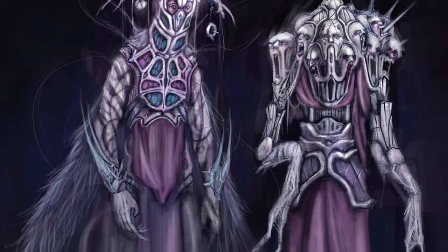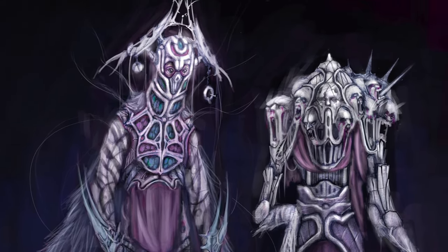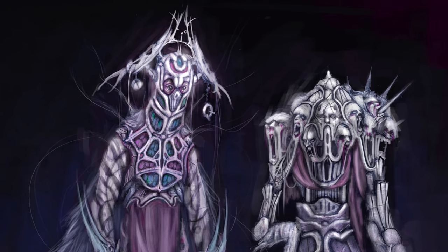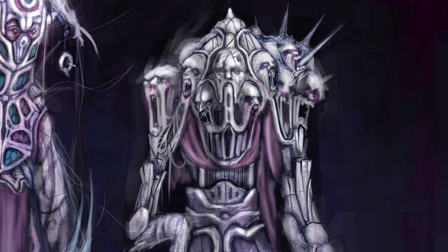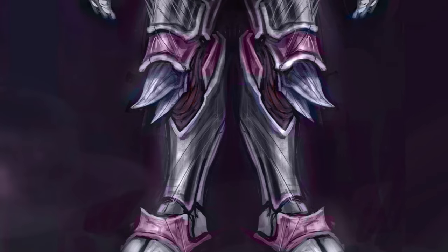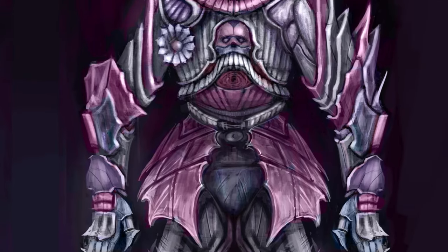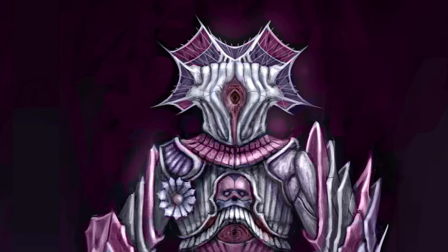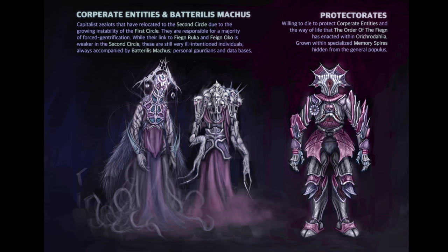Corporate entities are responsible for a majority of forced gentrification. While their link to Fane Ruka and Fane Oko is weaker in the second circle, these are still very ill-intentioned individuals, always accompanied by Bataryllus Machus, personal guardians, and databases. Protectorates are willing to die to protect corporate entities and the way of life that the Order of the Fane has enacted within Oricredalia. They are grown within specialized memory spires that are hidden from the general populace.